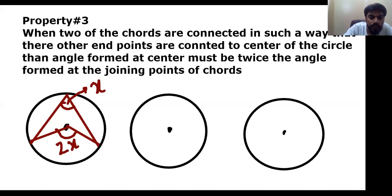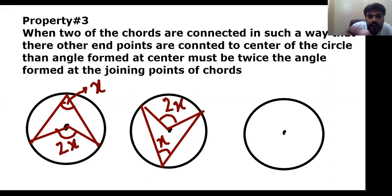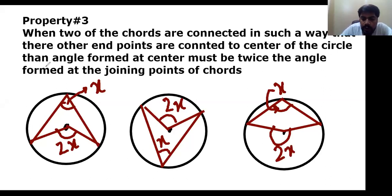Let me discuss property three again on another diagram. That is chord number one, that is chord number two. These two chords are connected in such a way that their other endpoints are connected to the center. According to the condition, the angle formed at the center must be twice the angle formed at the joining point of the chords. If the joining point angle is x, the center angle is 2x.